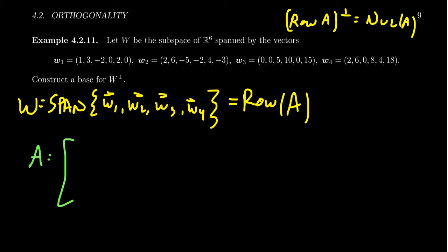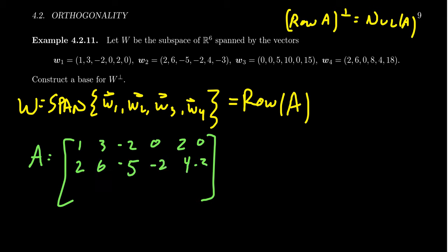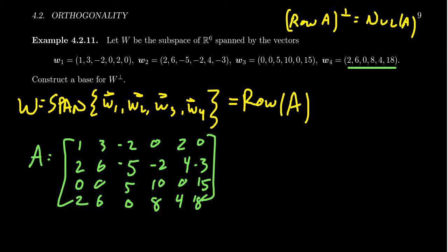The first row is W₁: 1, 3, −2, 0, 2, 0. The second row is W₂: 2, 6, −5, −2, 4, −3. The third row is W₃: 0, 0, 5, 10, 0, 15. The fourth row is W₄: 2, 6, 0, 8, 4, 18. Each row of the matrix is just one of the spanning vectors for W.